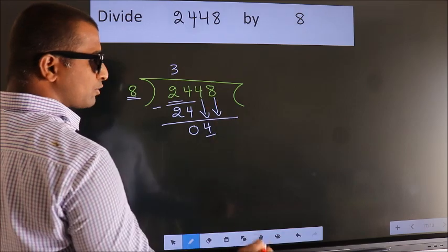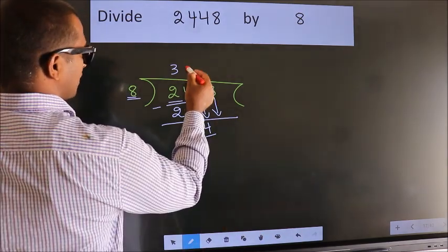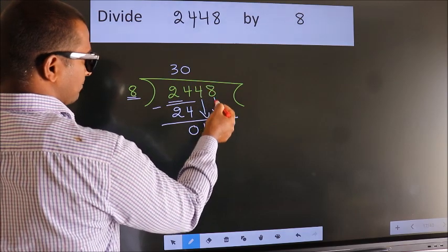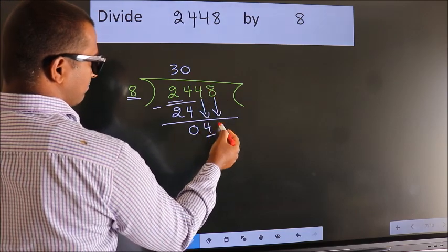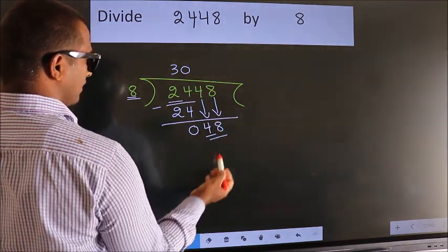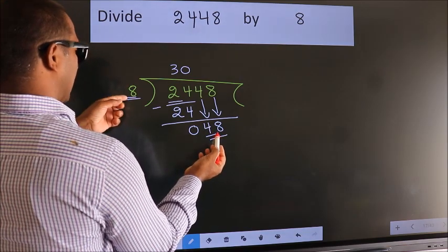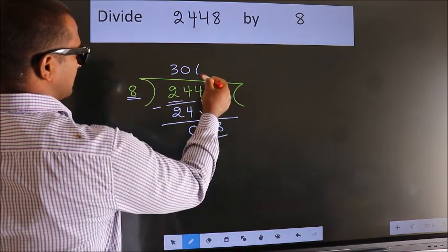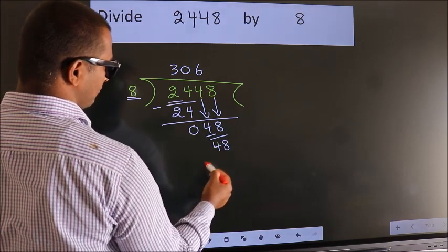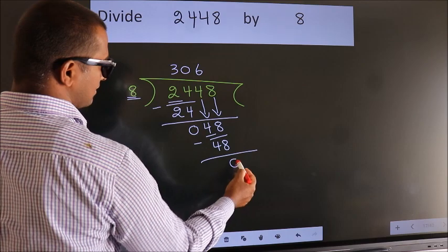The rule to bring down the second number is to put 0 here; then only we can bring down this number. So we have 48. When do we get 48 in the 8 table? 8 sixes are 48. Now we subtract. We get 0.